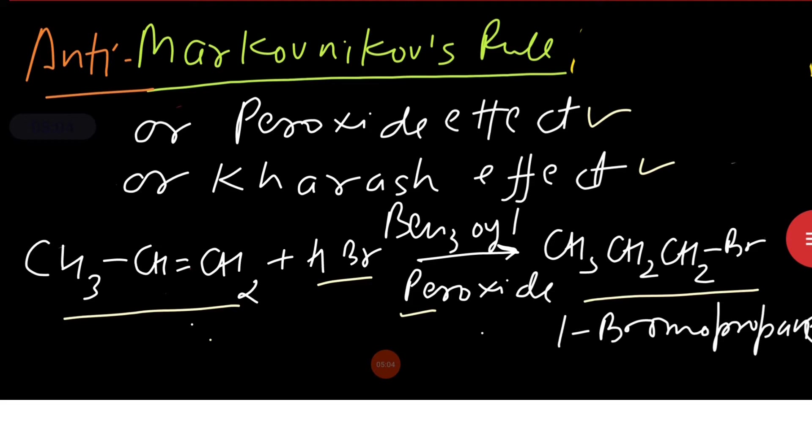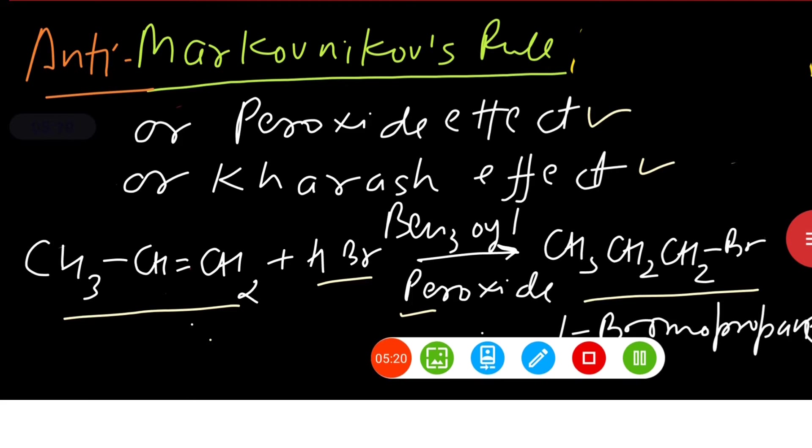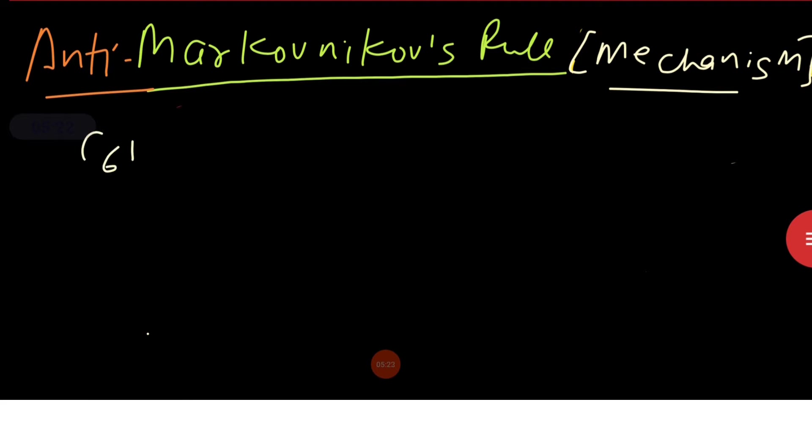Here addition of HBr to unsymmetrical alkene takes place contrary to the Markovnikov's rule. This happens only with HBr but not with HCl or HI. Now let us discuss mechanism. This is